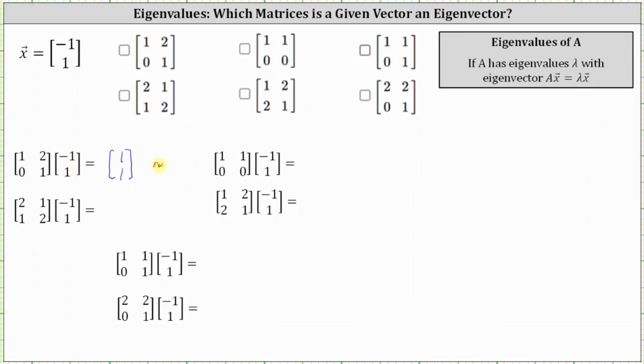So we can go ahead and state no, and we do not select the matrix [1, 2; 0, 1] from above.